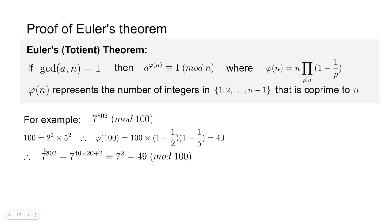This means 7^40 ≡ 1 (mod 100). So we divide the exponent 802 by 40, and the remainder is 2. Therefore the whole expression is congruent to 7² = 49 (mod 100), which means the last two digits of 7^802 are 49.